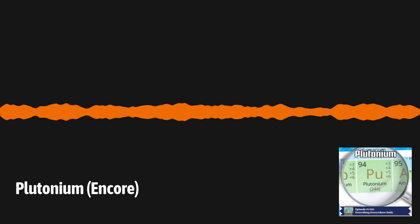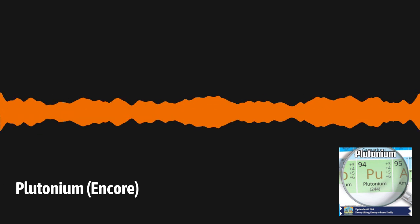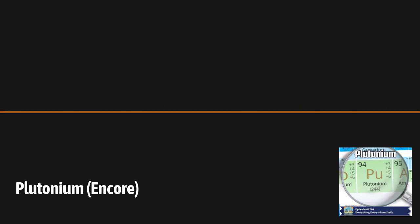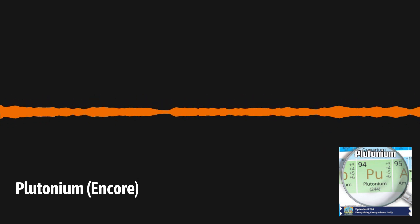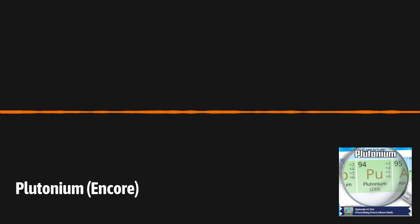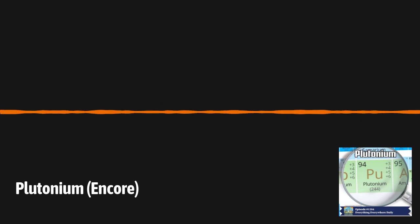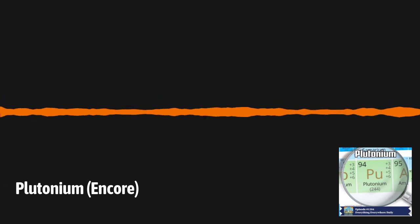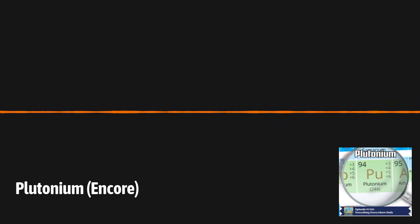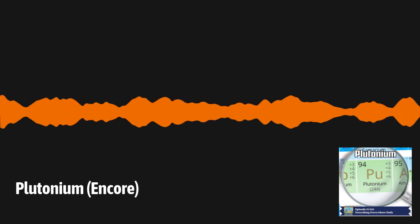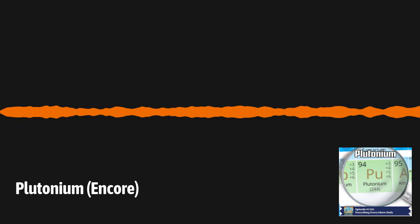When plutonium was first being produced in quantity during the Manhattan Project, no one really knew anything about it. One researcher, Donald Mastic, accidentally swallowed a small amount of plutonium chloride, and it was detectable in his body for 30 years. From 1945 to 1947, 18 people actually had plutonium injected into their bodies for testing. One man named Albert Stevens, a house painter from Ohio, was injected with 3.5 microcuries of plutonium without his informed consent. Astonishingly, he lived to the age of 79, 20 years after his injection, and died of a heart attack, not cancer. It is believed that he received the highest accumulated dose of radiation of any human in history.